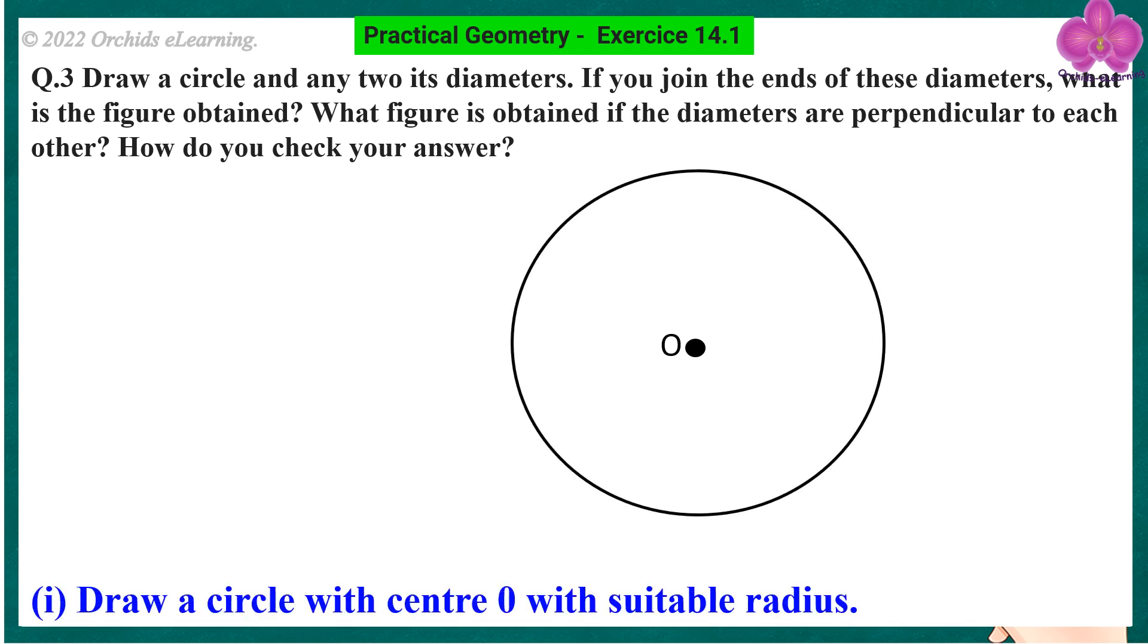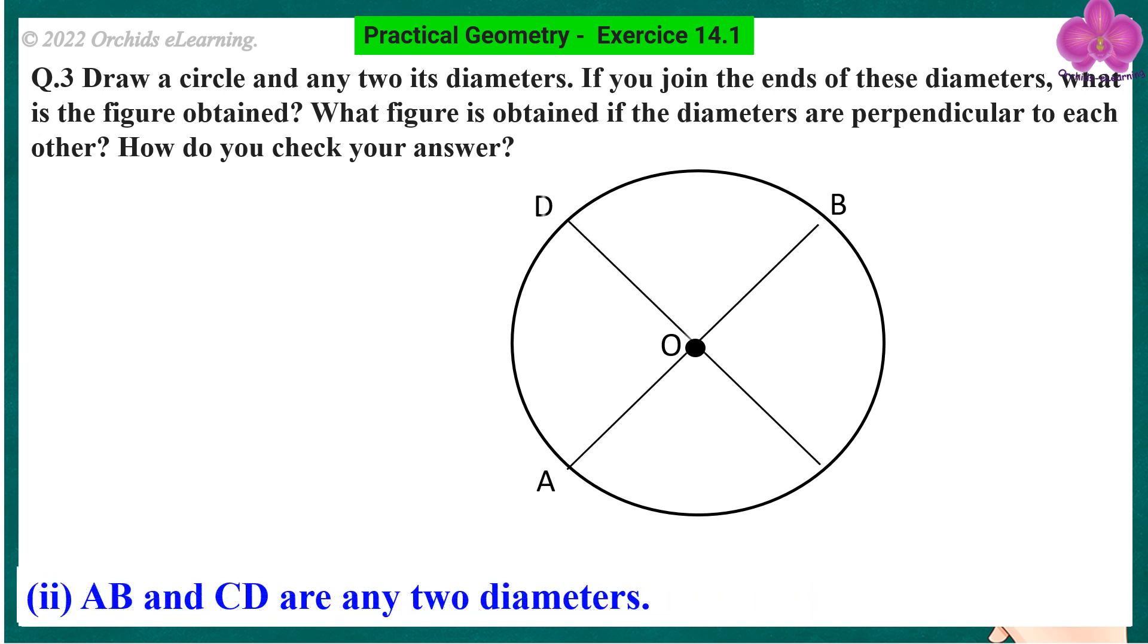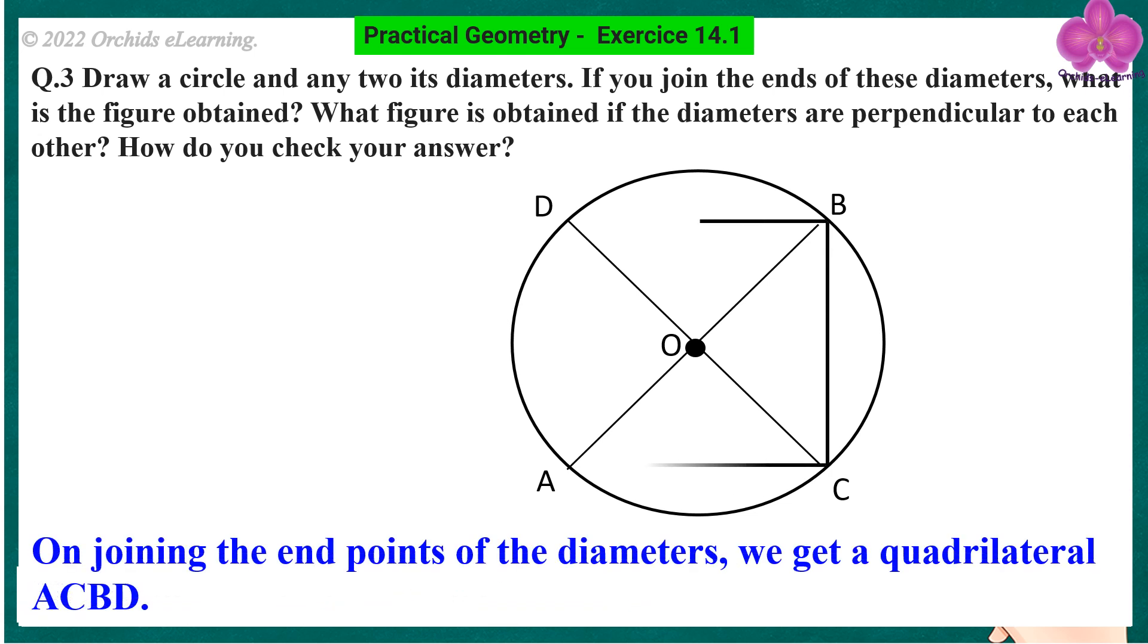Draw a circle with center O with a suitable radius. A, B and C, D are any two diameters. On joining the endpoints of the diameters, we get a quadrilateral ACBD.